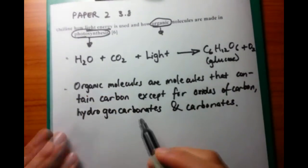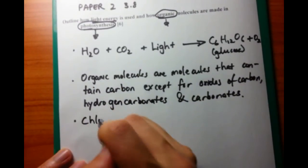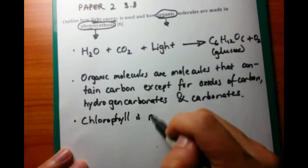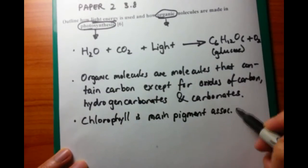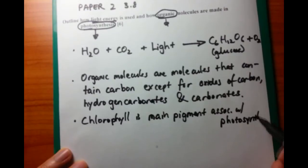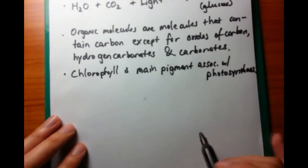Now we have to get to how photosynthesis and organic molecules are related. The key thing that will get you started is talking about chlorophyll, the main pigment associated with photosynthesis. How does this work?